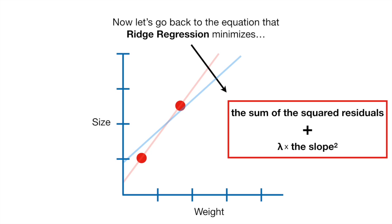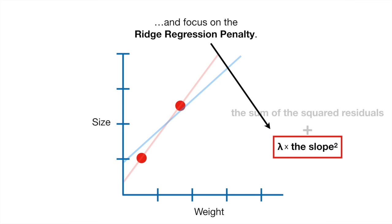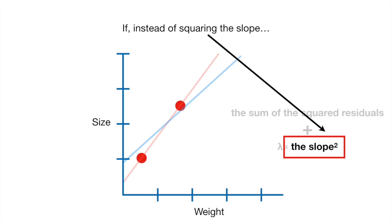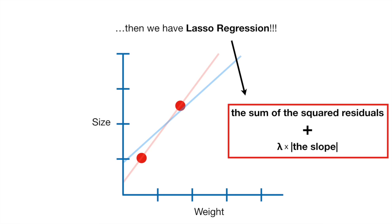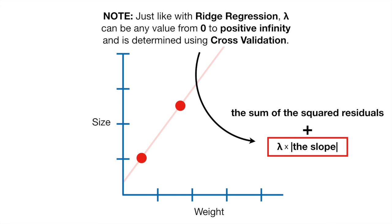Now let's go back to the equation that Ridge Regression minimizes and focus on the Ridge Regression penalty. If, instead of squaring the slope, we take the absolute value, then we have Lasso Regression. Just like with Ridge Regression, lambda can be any value from 0 to positive infinity and is determined using cross-validation.